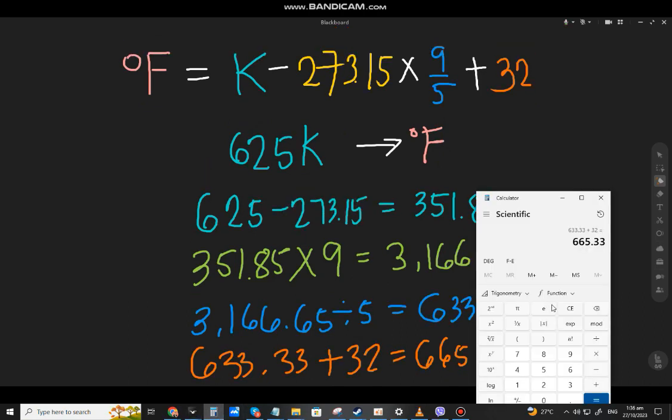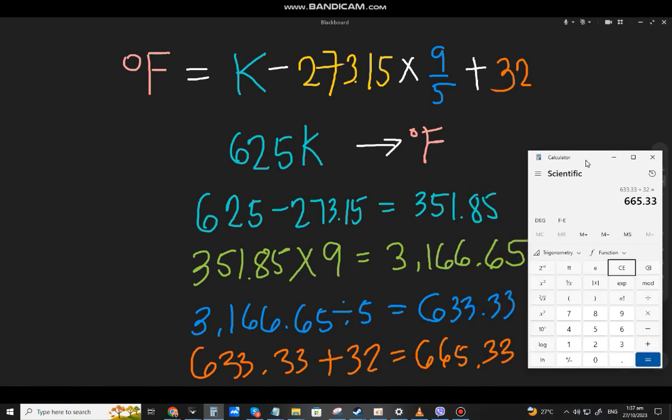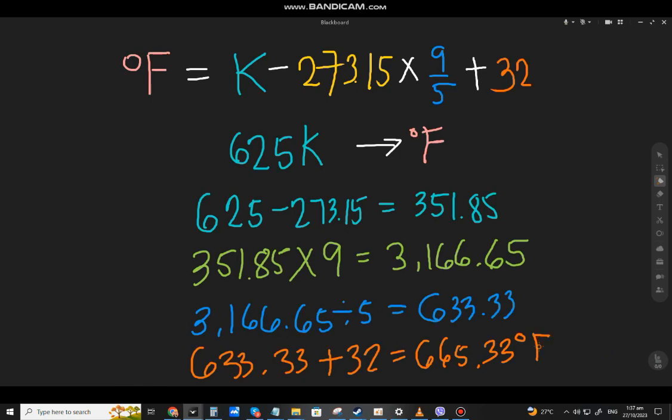On the calculator, look: 625 minus 273.15, multiply by 9, divide by 5, equals, plus 32, equals 665.33. And put the degrees Fahrenheit symbol.